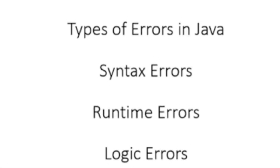These are the three different types of errors which will be there in a Java program. While writing a program we have to keep in mind that errors will be created and these errors will create a lot of problems during execution. We have to check each and everything whatever we write in a program. During compilation and execution we can easily see the errors made while writing Java programs.